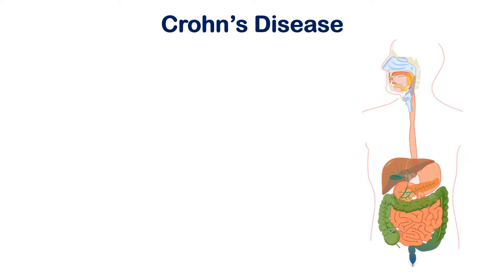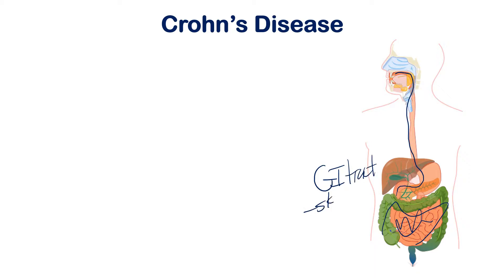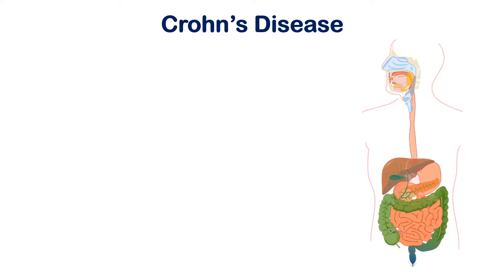The damage from Crohn's disease can skip throughout the entire GI tract. Crohn's disease can happen anywhere from your mouth all the way down into the stomach, the small intestine, and through the large intestine — anywhere in the GI tract. But its most common spot is the terminal ileum, which is the final segment of the small intestine. The sections of the small intestine are the duodenum, the jejunum, and the ileum.